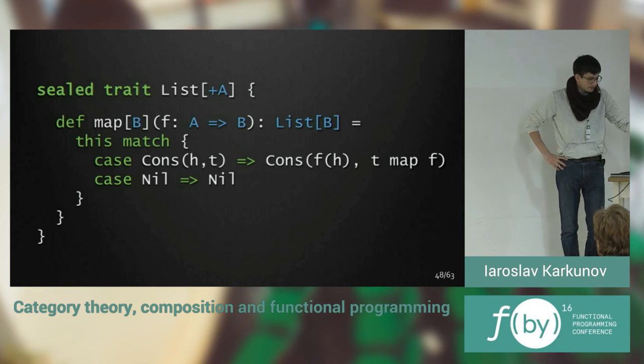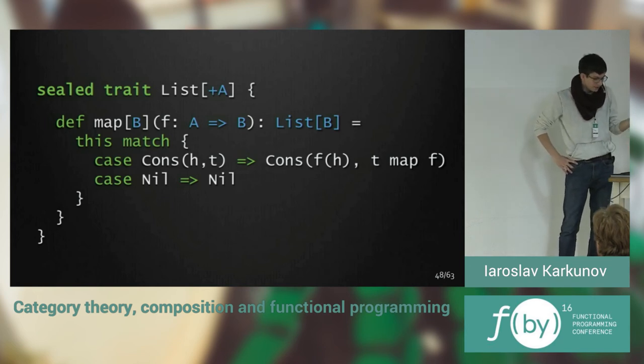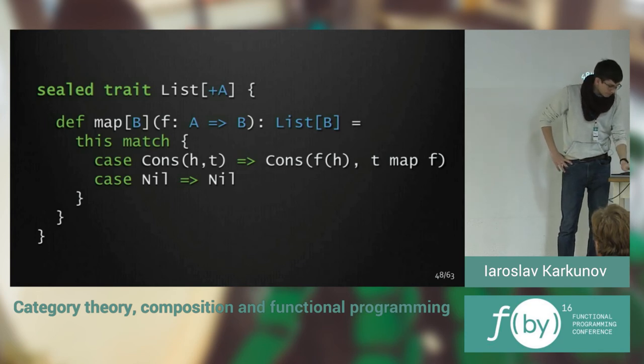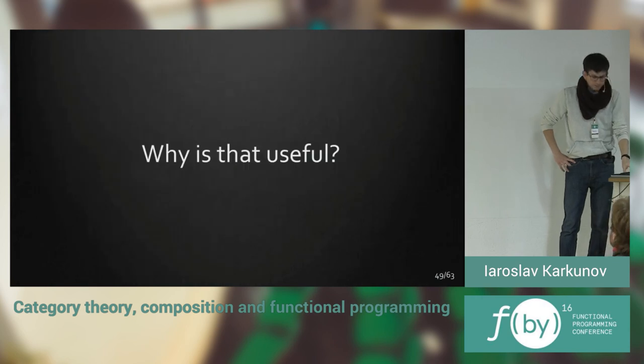If there is some value, we will just map the function on that value, and further recursively. And if nil, we just return nil. Why is that useful, actually?